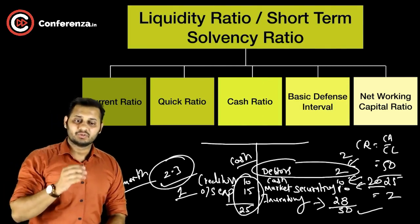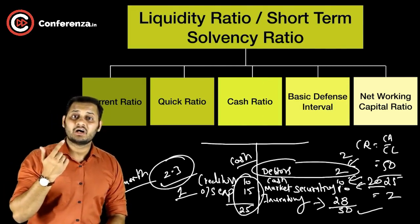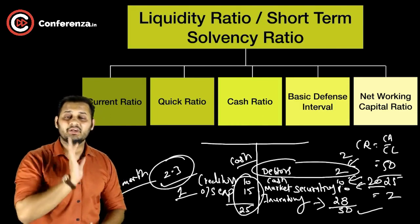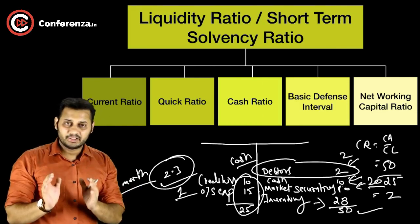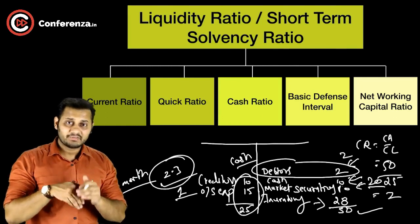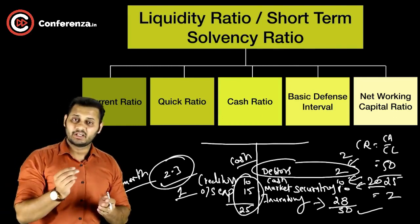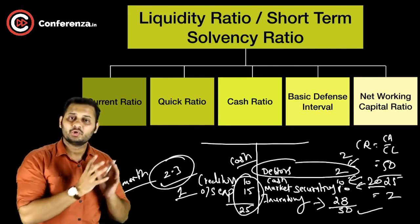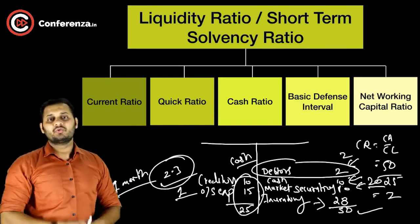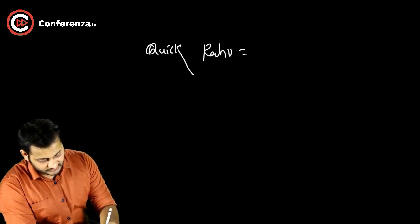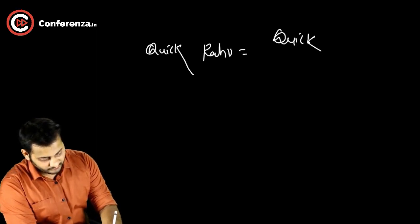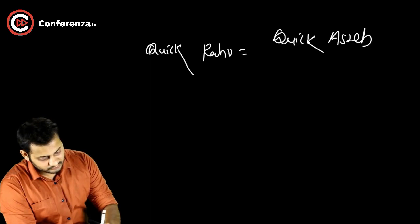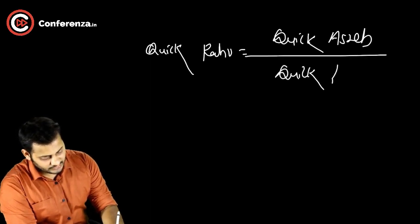Quick ratio means quickly available cash. Quick ratio addresses which liabilities are due early, within 2-3 months. So quick ratio means: how much quick cash is available to meet quick liabilities? Quick ratio is nothing but quick assets divided by quick liabilities.